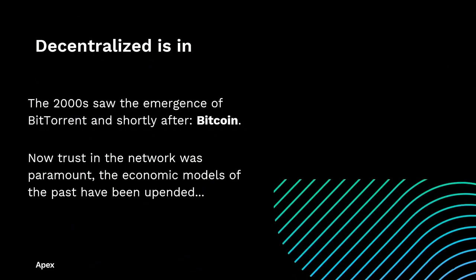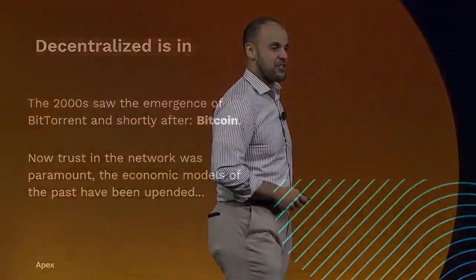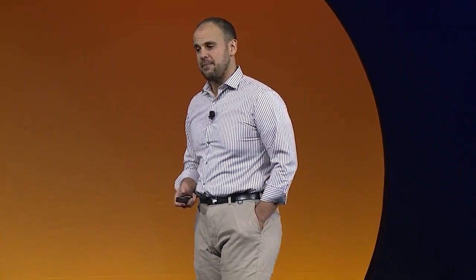After this, the 2000s saw the emergence of BitTorrent and Bitcoin. These decentralized protocols facilitated the transfer of content and value around the world. Trust in the network is now paramount — the economic models of the past have been upended. This brings us to the blockchain. There are many ways to model the blockchain, but in this talk we're going to discuss it as the intersection of state, communication, and consensus through which that state is modified.